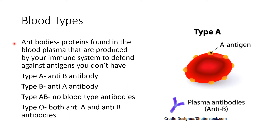The type of antigen you have on your red blood cell surfaces determines what type of antibodies you produce. Antibodies are proteins made by your immune system that float around in your blood plasma and defend you against antigens that don't belong in your body. If you have type A blood, your immune system produces anti-B antibodies, because a B antigen would be foreign to your body and your body would want to attack it.